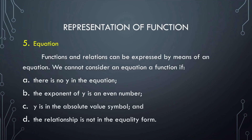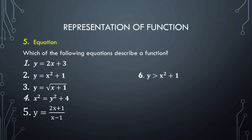The last representation is by equation. To identify whether an equation is a function, we check the following conditions that indicate it is NOT a function: first, there is no Y in the equation; second, the exponent of Y is an even number; third, Y is inside an absolute value symbol; fourth, the relationship is not in equality form. For example, equations 1, 2, 3, and 5 are functions because they satisfy the conditions. Equations 4 and 6 are not functions — number 4 has Y raised to an even exponent (2), and number 6 is not in equality form.